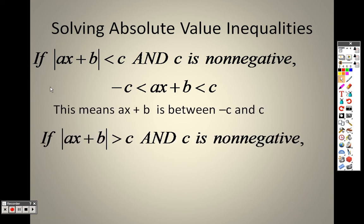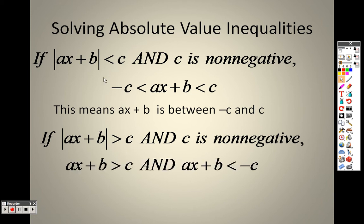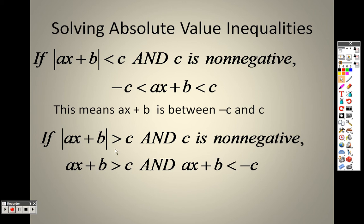If you have a greater-than sign, and again c is non-negative, you have to rewrite it as two separate inequalities. You write down exactly what you have for the first one. For the second one, you flip the inequality sign and make c negative. So when you have greater-than or greater-than-or-equal-to, you write two separate inequalities.